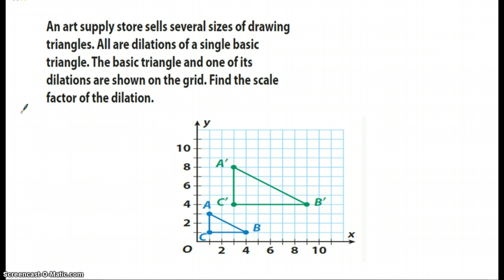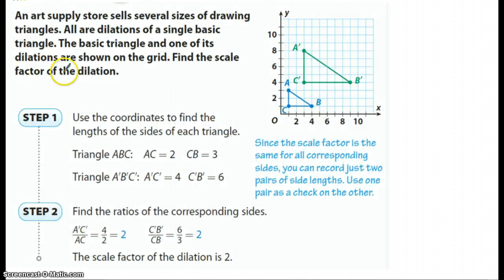Now, the author gives us a real-life example, and he's going to go through with the steps that we need to do. So, I'll try to help you break these down, but I'm quite sure it'll be pretty rewarding for you to do it. So it says, an art supply store sells several sizes of drawing triangles. All the dilations of a single basic triangle. The basic triangle and one of its dilations are shown on this grid. So it's asked you to find the scale factor of dilation, and they're going to go through the steps.